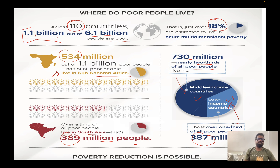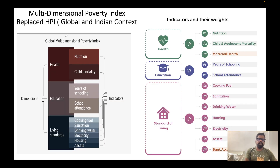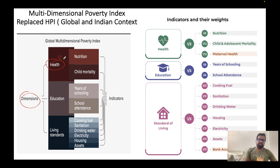This is the brief snapshot of the MDPI report 2023 published by UNDP. The global MPI has three dimensions: the first is health, the second is education, and the third is living standards. Each dimension — health, education, and living standards — contributes one-third to the overall index.